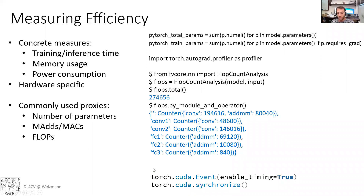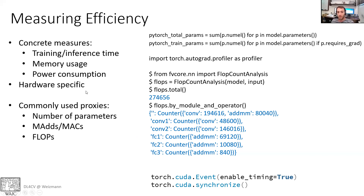One more point: estimating training and inference time is not trivial when using GPUs and parallel processes. You can't just use Python's time module. To get around this, use torch.cuda.Event and torch.cuda.synchronize to synchronize between GPU and CPU processes and actually measure the time correctly.